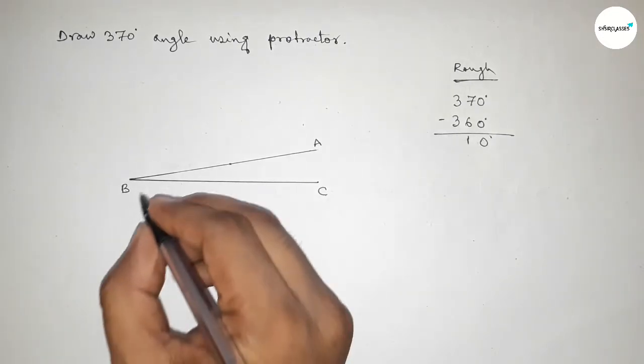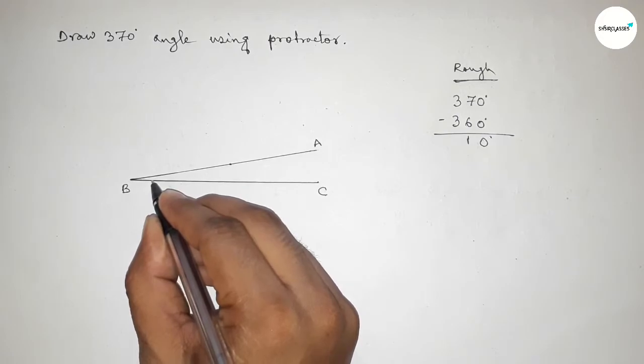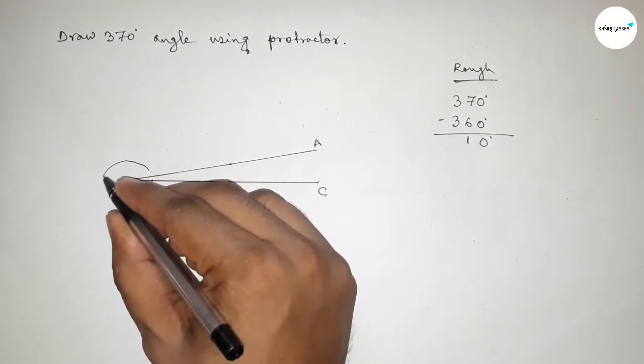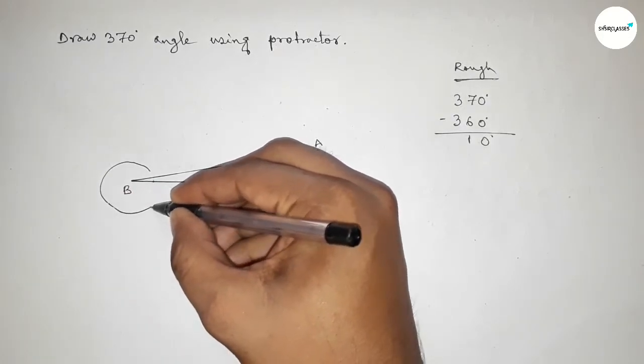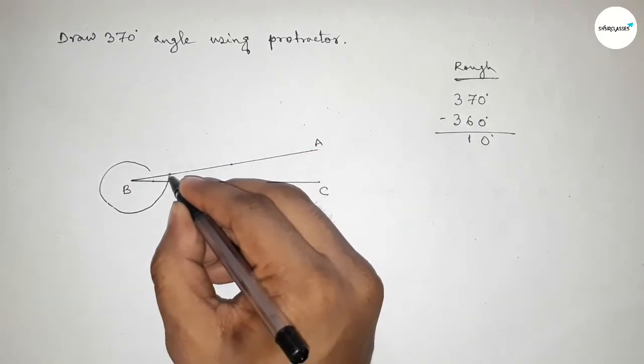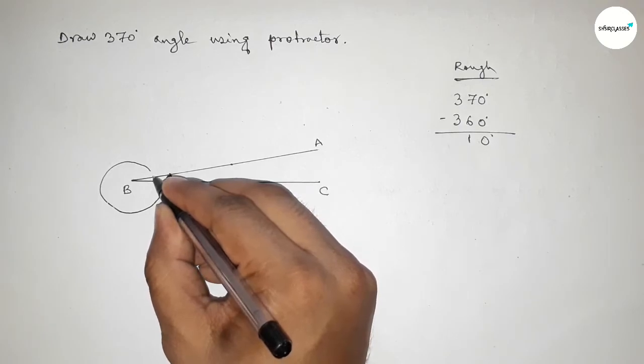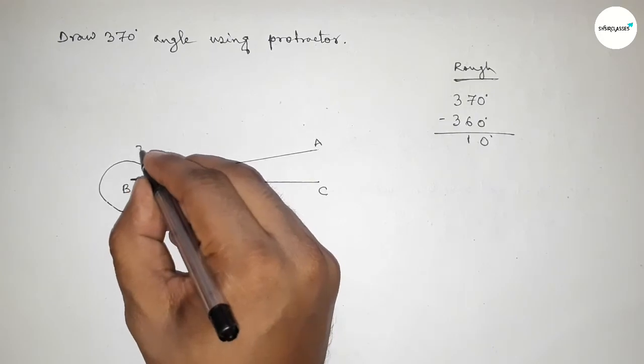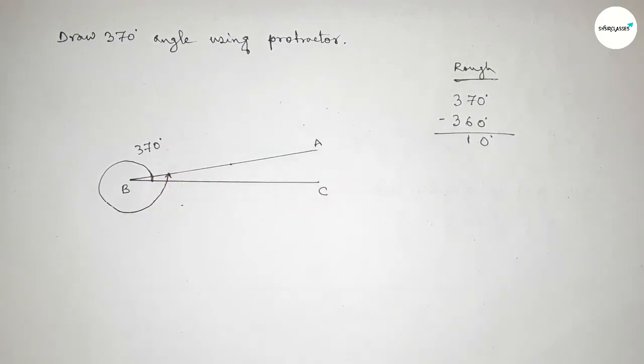an arc from line BC to line AB in this way. So here drawing an arc from line BC to line AB, and this represents a 370 degree angle. So that's all.